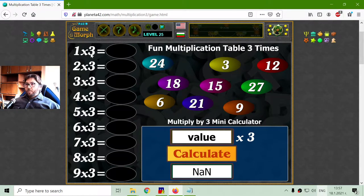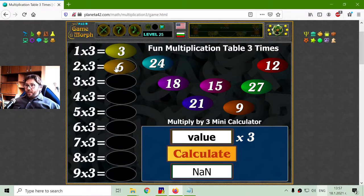1 multiplied by 3 should be 3. This time I will not mistake it like the previous time. Then we have 2 multiplied by 3 should be 6.